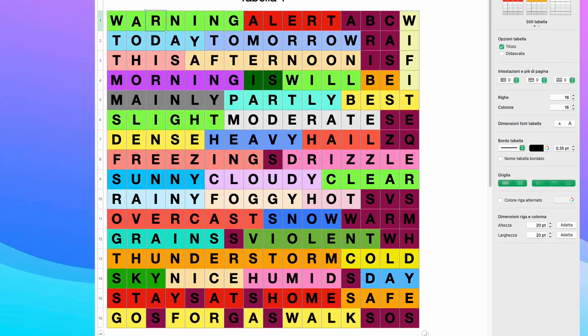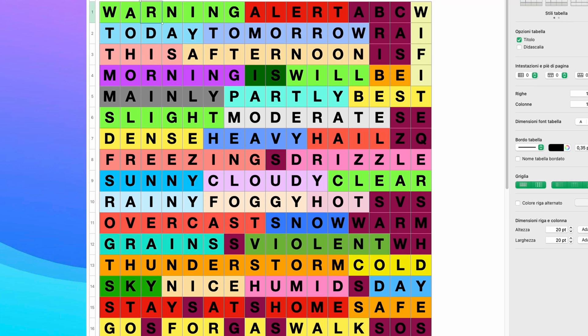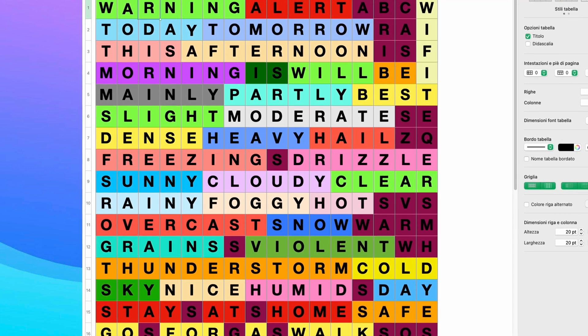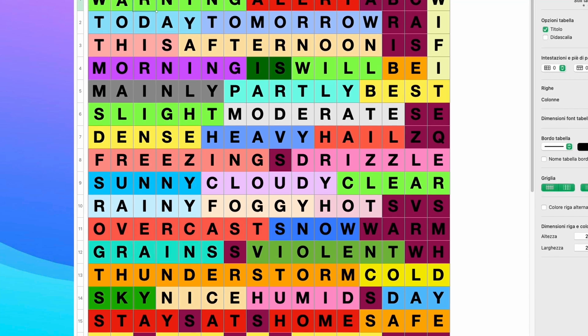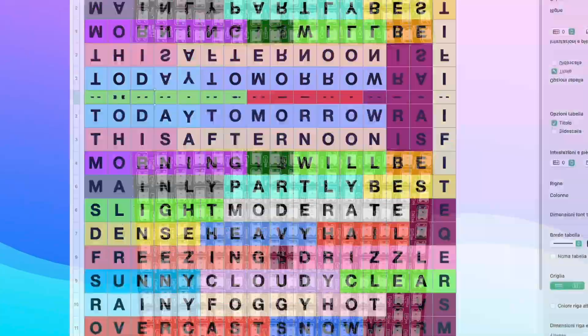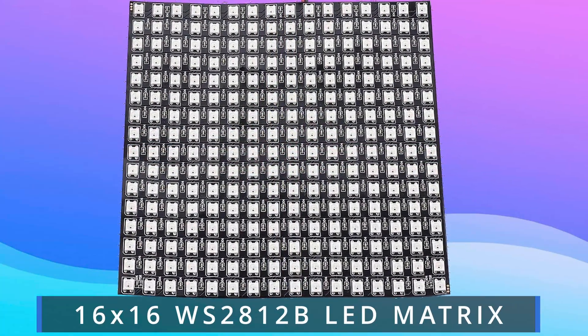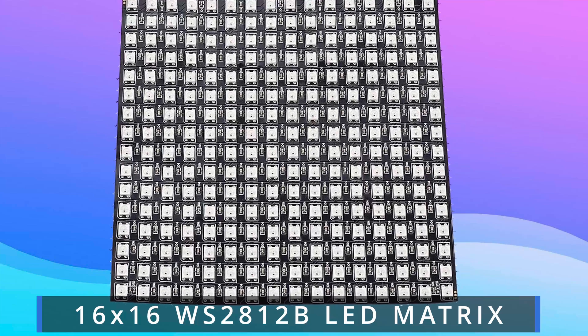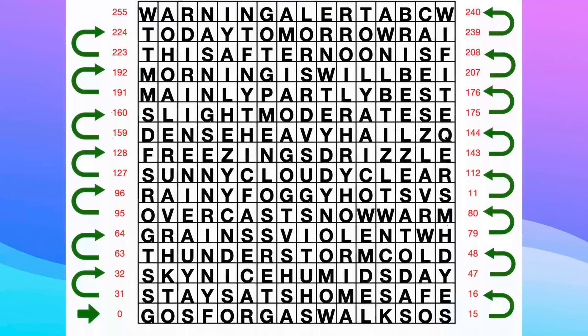I used a spreadsheet, such as Numbers for Mac or Excel for Windows, to create a 16x16 cells matrix by inserting the words that make up the weather forecast. I will use this 16x16 matrix of WS2812B addressable RGB LEDs.